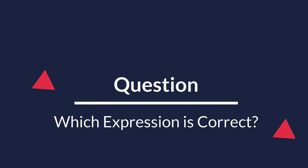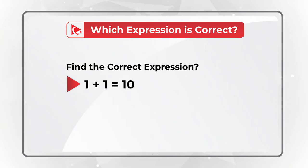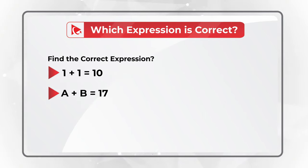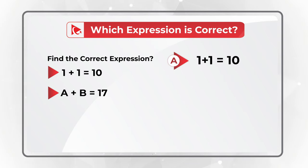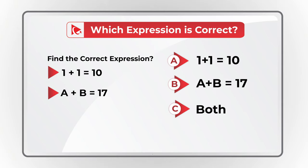Here's a very unusual question which is frequently used in tests. You need to find the correct expression. You're presented with two choices: '1 plus 1 equals 10' and 'A plus B equals 17.' Choice A says '1 plus 1 equals 10' is correct, choice B says 'A plus B equals 17' is correct, choice C says both are correct, and choice D says none are correct.